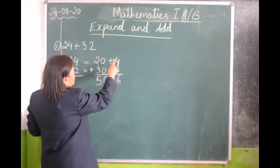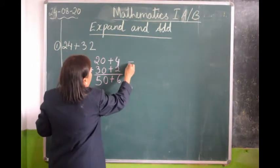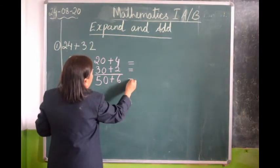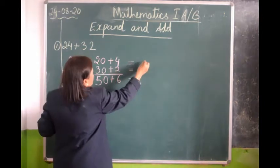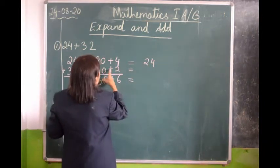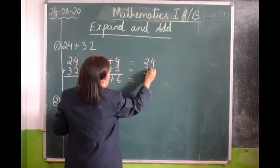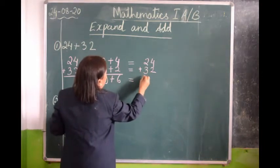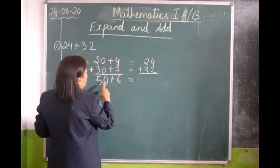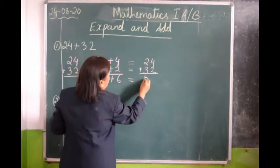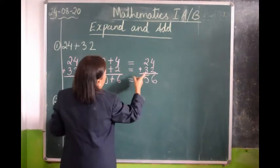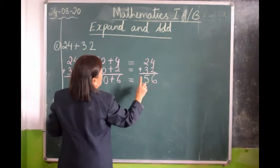Now we are going to write the same number in compact form. 4 equals to 20 plus 4 is 24. 30 plus 2 is 32. We will write plus here. 50 plus 6 is 56. So 24 plus 32 is 56.